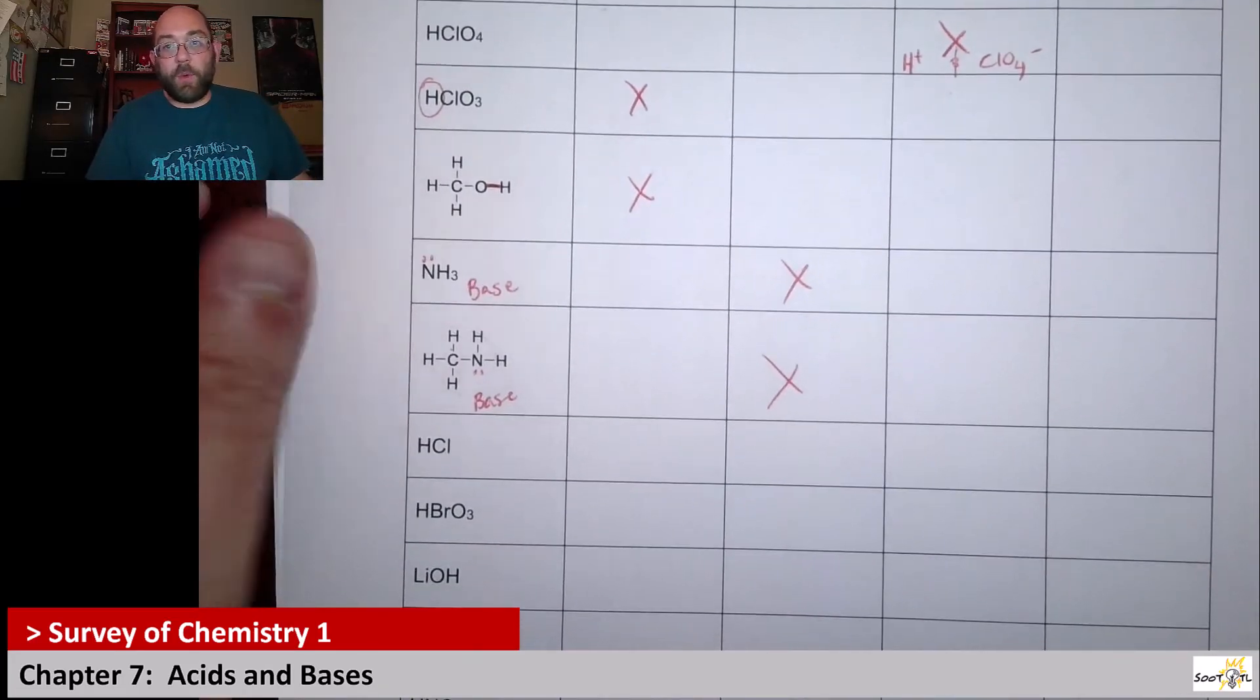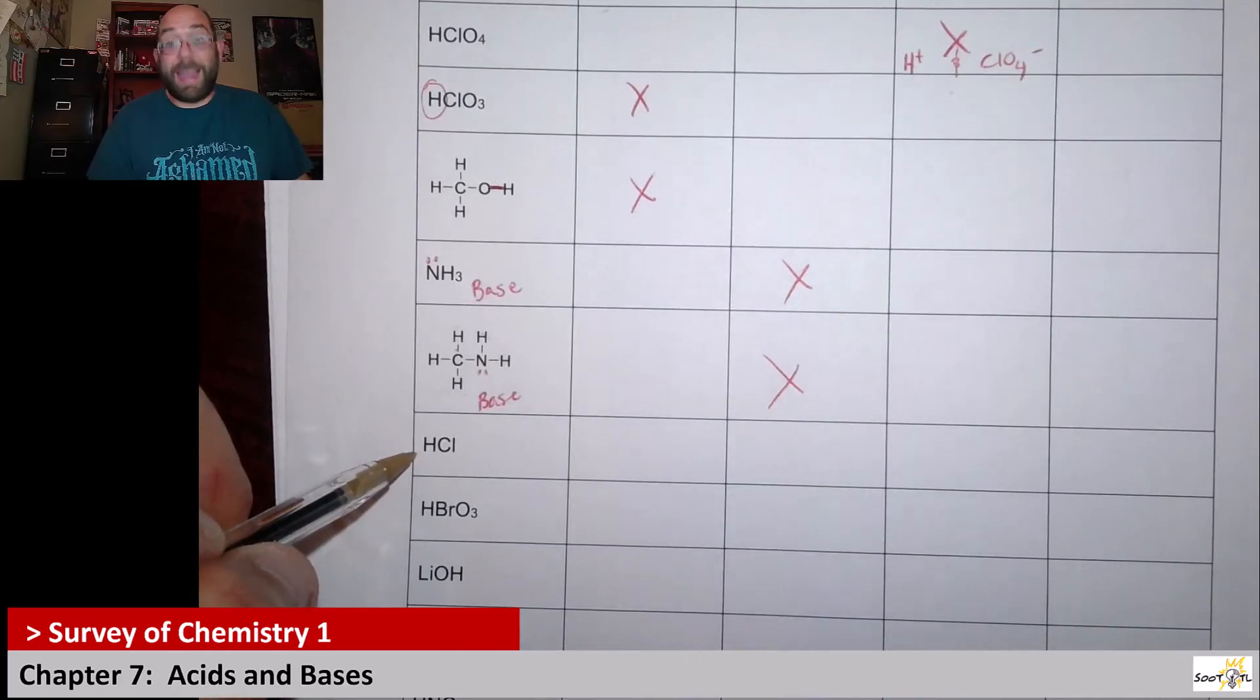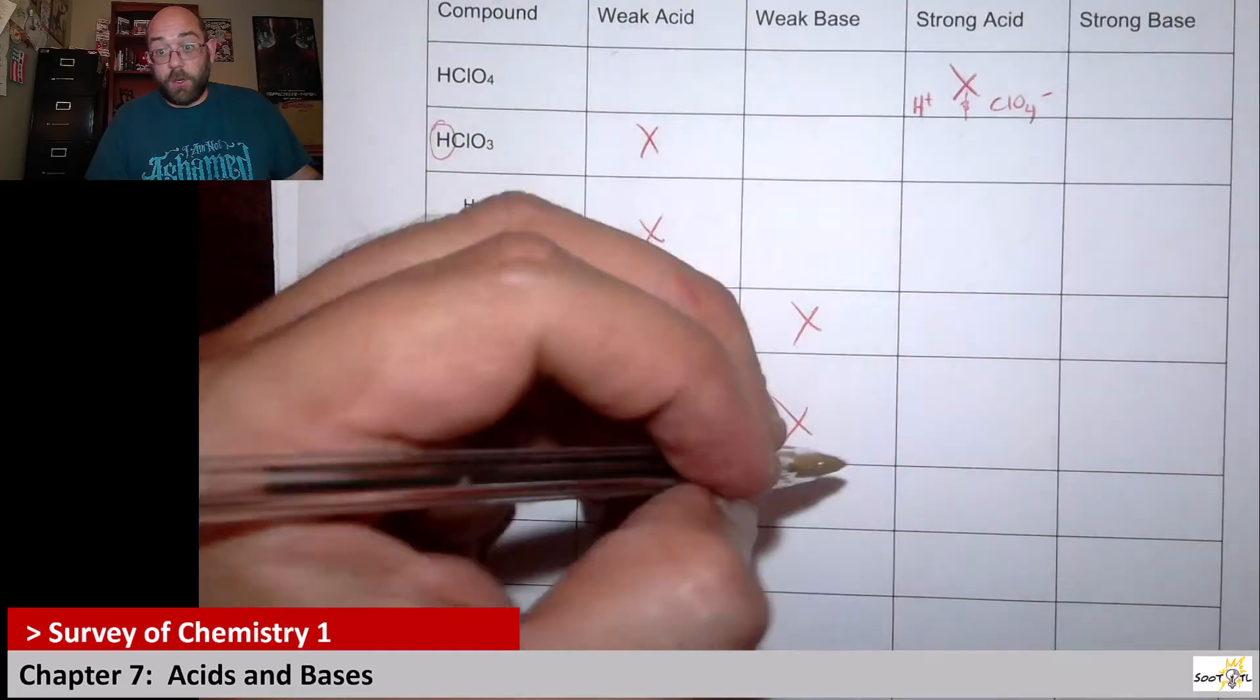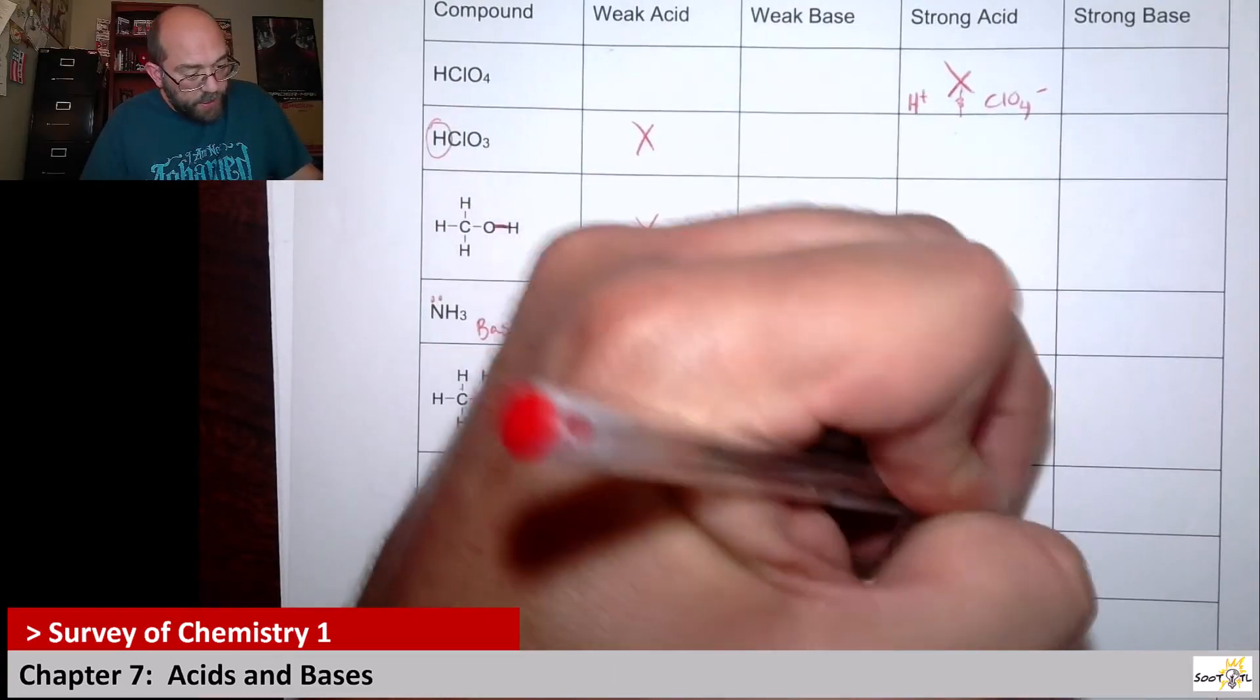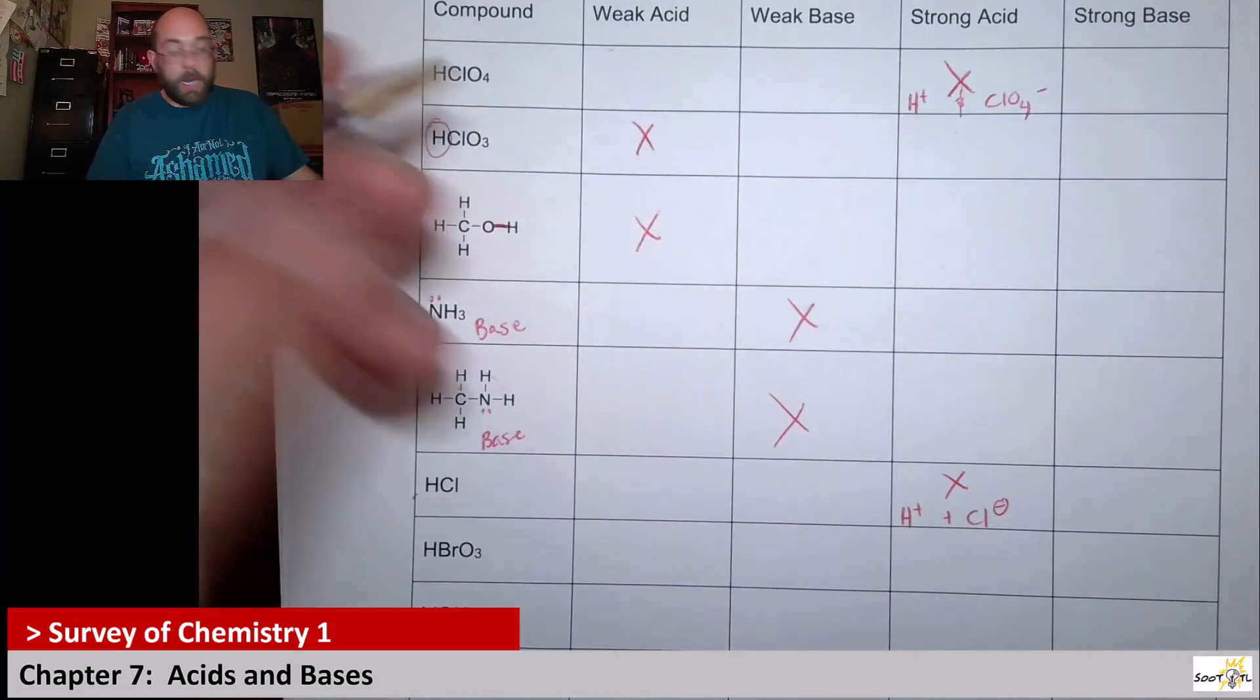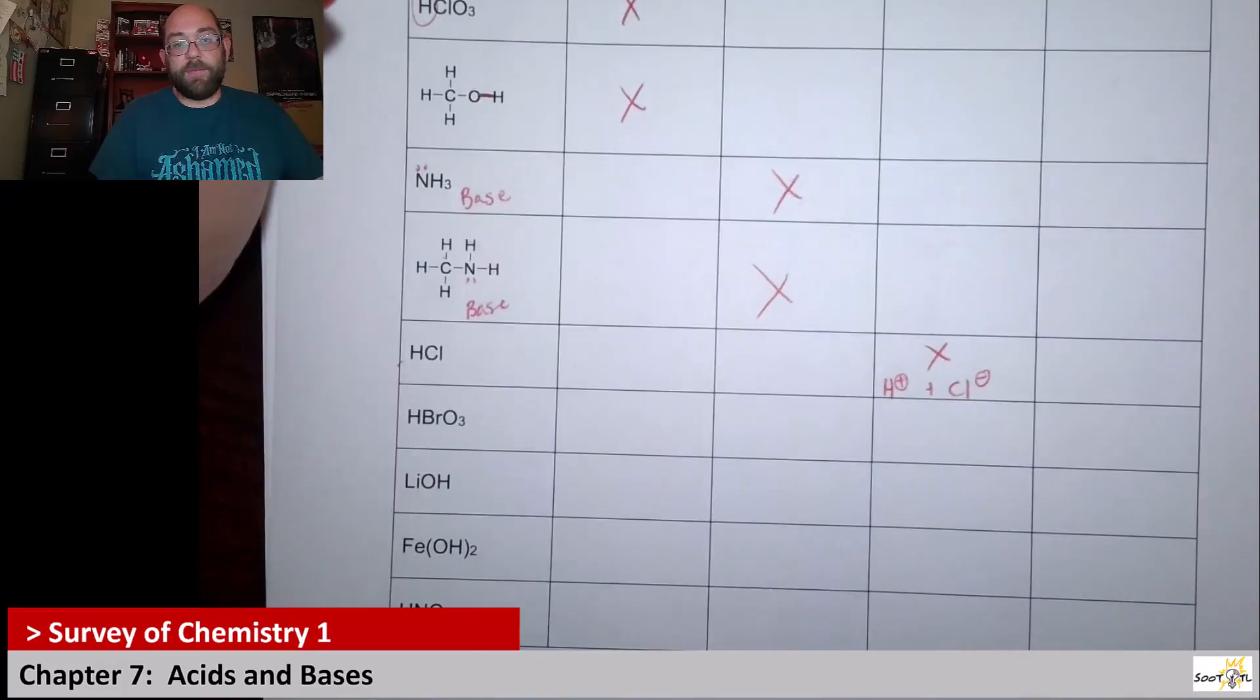Next up we have HCl—that's hydrochloric acid that was in our strong acid list. So I'm going to put an X over here for it. It will break apart efficiently into its individual ions.